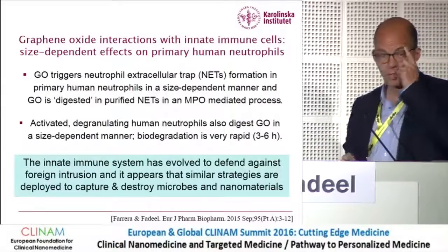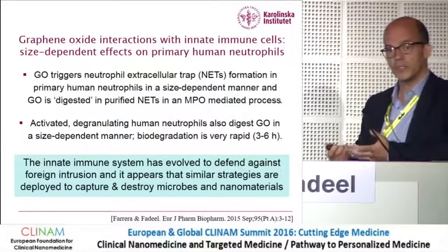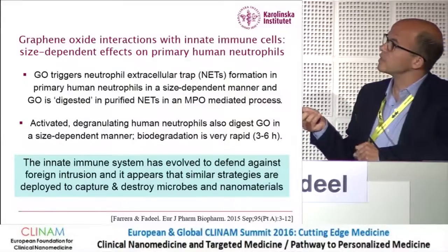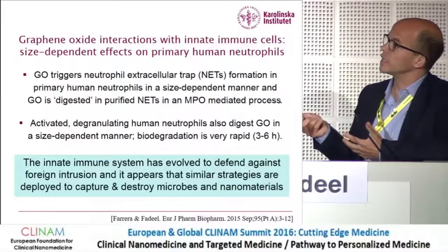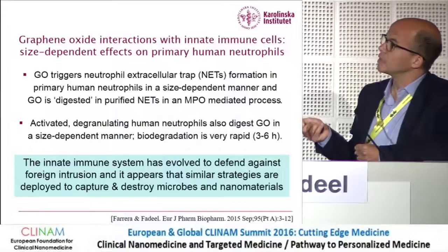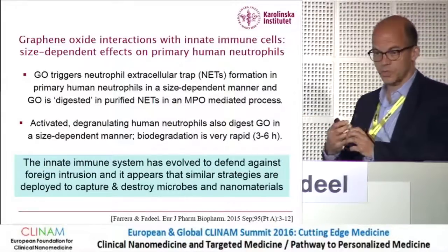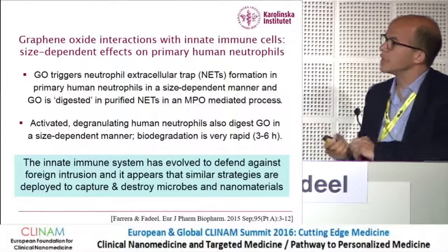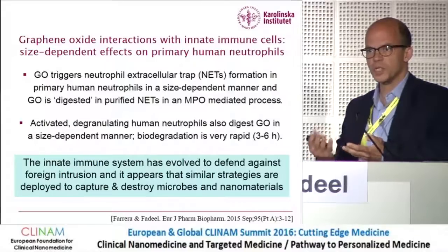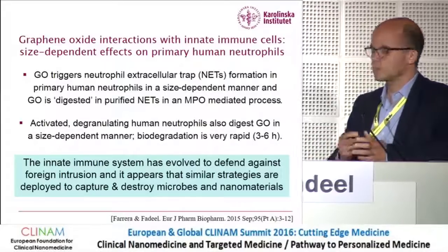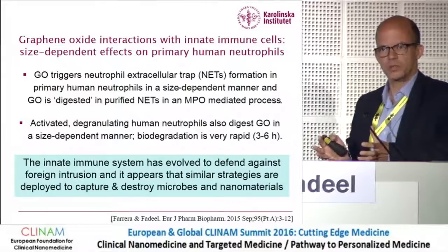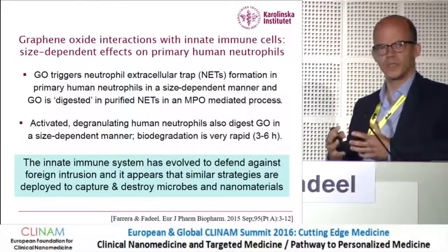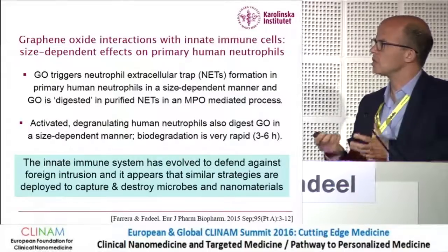To summarize: in contrast to macrophages, where we did not see size-dependent effects and no toxicity, for neutrophils we do see that graphene oxide triggers NETs in primary human neutrophils in a size-dependent manner. These NETs, which contain myeloperoxidase, can actually digest or biodegrade graphene oxide. Moreover, activated neutrophils can also digest graphene oxide extracellularly due to the release of myeloperoxidase. Overall, our innate immune system has evolved to protect us from foreign intrusion — microbes, fungi, etc. Based on these studies, we may speculate that the immune system can also sense two-dimensional objects, which I think is rather fascinating, and use very similar mechanisms — in this case, NET production and digestion — to destroy these materials.